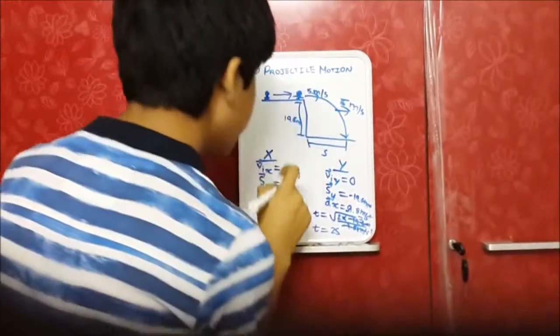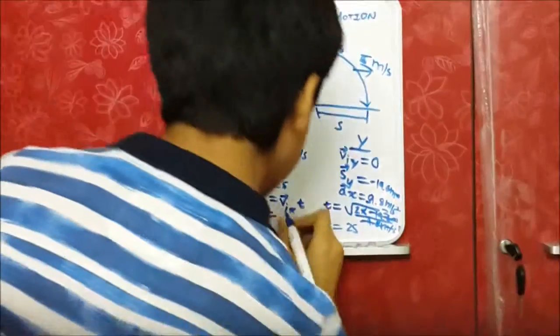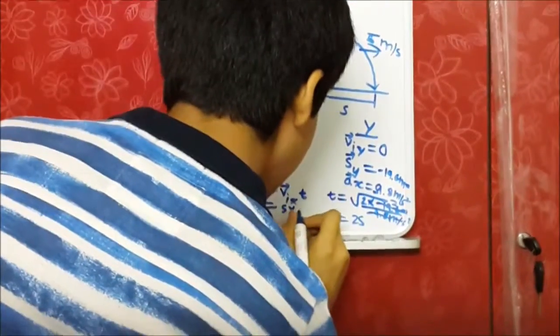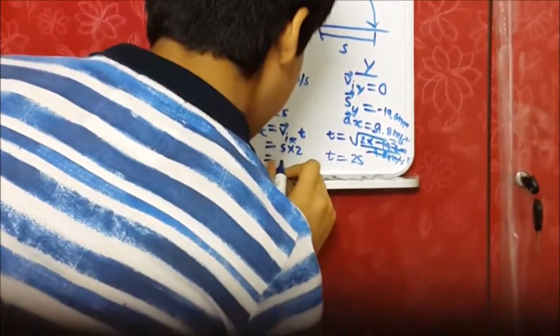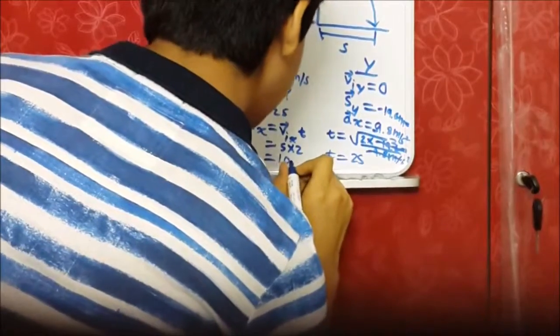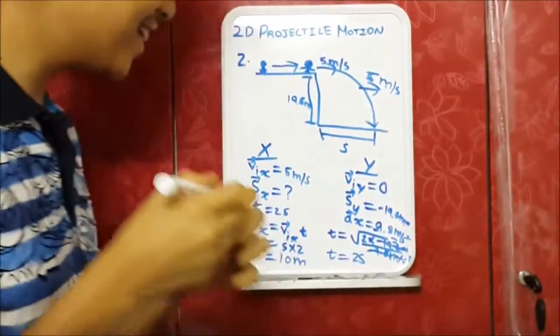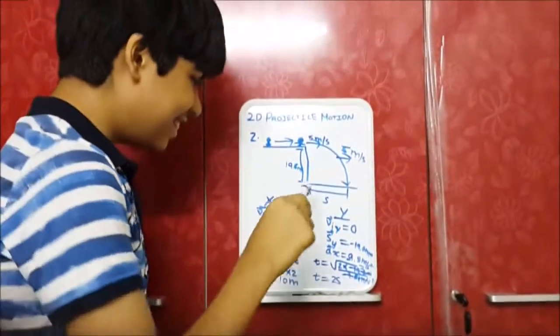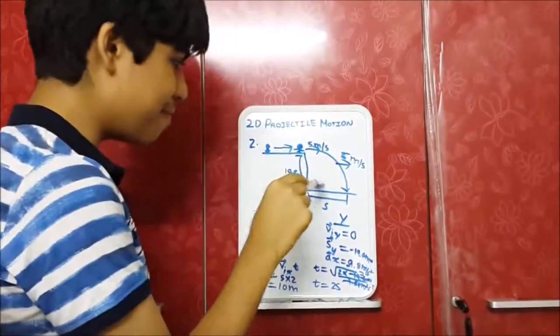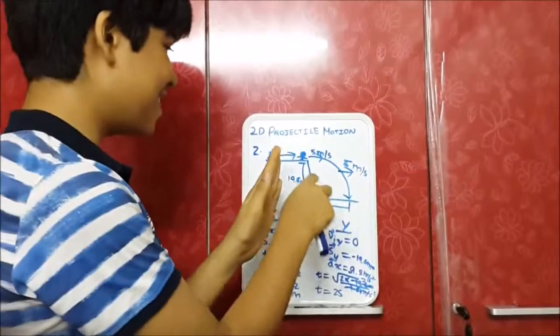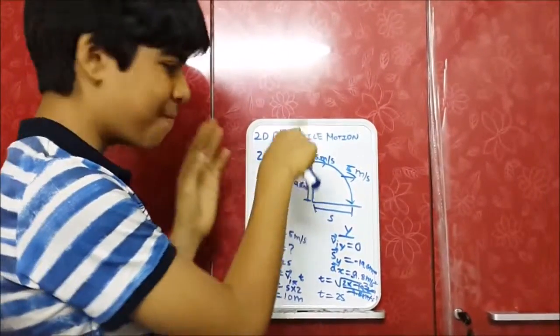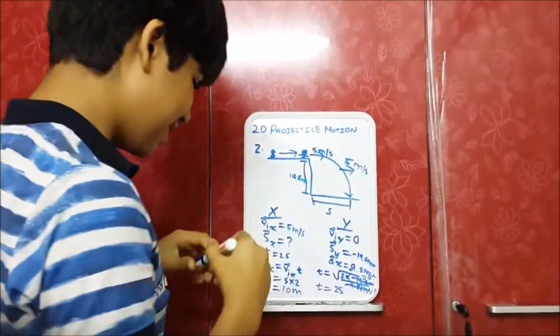Is equal to 5 into 2. Almost finished our problem. So, he did go 10 meters away from the cliff, vertical cliff.